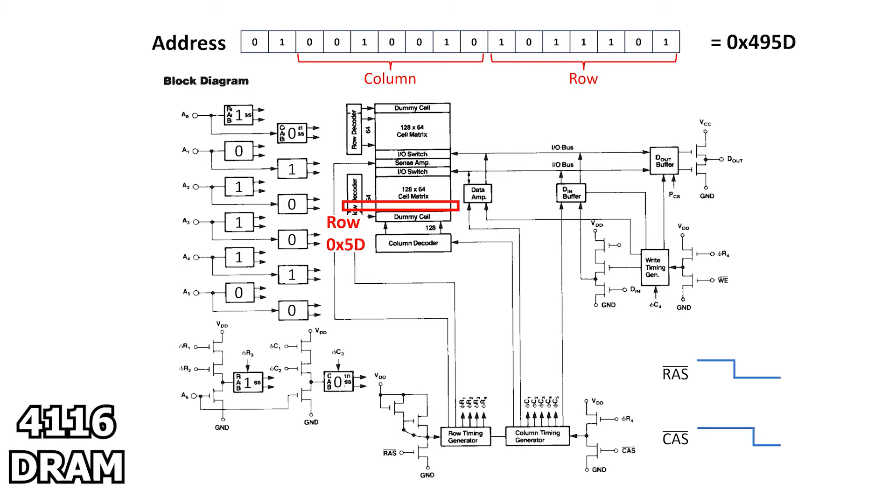The cell matrix at row 5D used up all the charges in the capacitors during the initial read, so now row 5D is empty, but the data is still stored in the I/O switch. To solve this problem, at the end of RAS, all 128 bits stored in the I/O switch are written back to the cell memory, and that data is good for another 2 milliseconds.